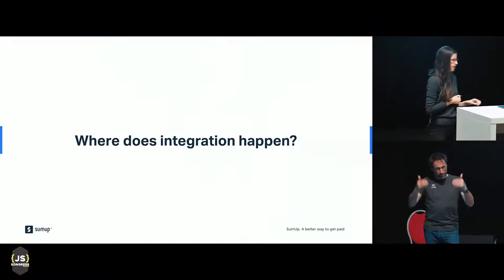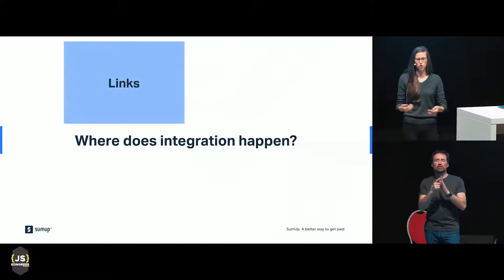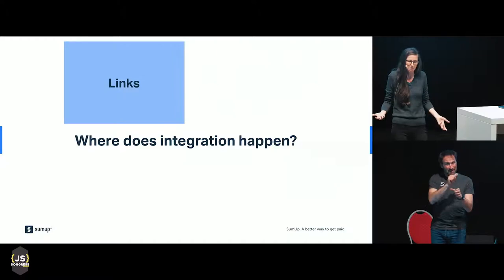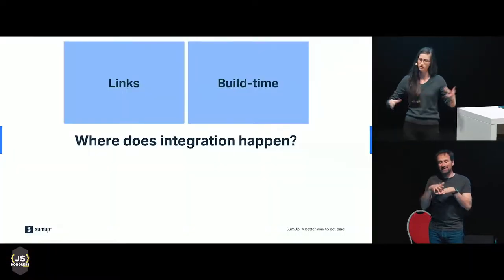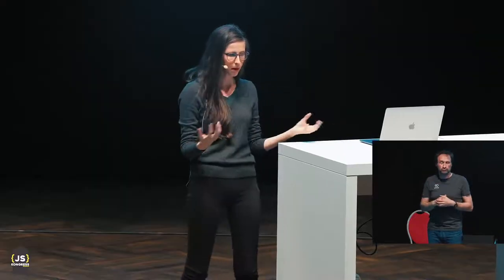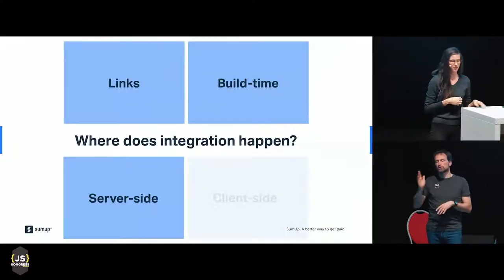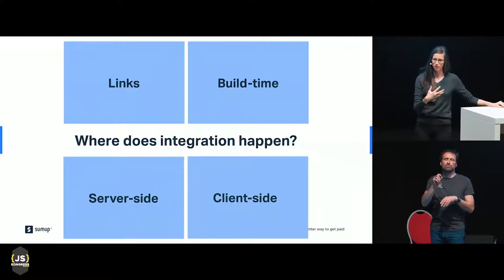The main thing that distinguishes between approaches is where integration happens, and that depends on your requirements. You can do this from links — one app links to another through a hyperlink. That's micro frontends for some people; it's probably the technically simplest way. You also have build time integration, common in a monorepo, where everything comes together at build time. Then server side integration, where the server is responsible for bringing together all the artifacts. And client side integration, where you request something and put it in the DOM. All these approaches have their own benefits and drawbacks.